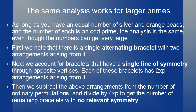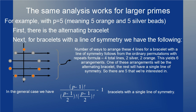First we note that there is a single alternating bracelet with two arrangements arising from it. Next we account for bracelets that have a single line of symmetry through opposite vertices — each of these bracelets has 2 times p arrangements arising from it. Then we subtract the above arrangements from the number of ordinary permutations and divide by 4 times p in order to get the number of remaining bracelets that have no relevant symmetry. We figure out the number of ways to arrange the lines for a bracelet with a line of symmetry, which follows from the ordinary permutations with repeats formula.